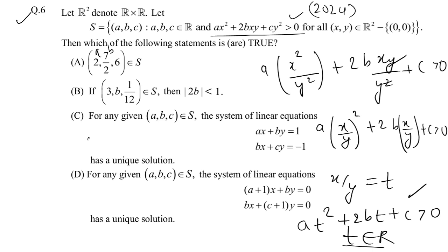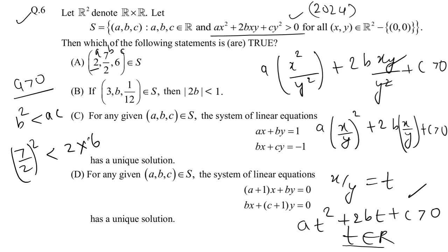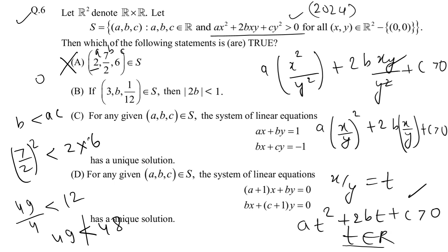Ab Option A check karte hain. Option A mein a = 2 diya hai, matlab a > 0 bilkul sahi. Lekin b² < ac check karte hain: (7/2)² < 2×6, yani 49/4 < 12, yani 49 < 48 — yeh possible nahi hai. Isliye Option A correct nahi hai.